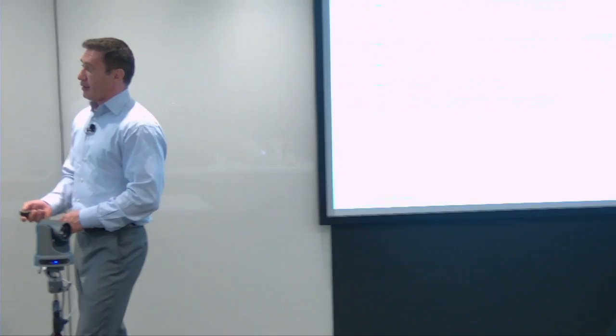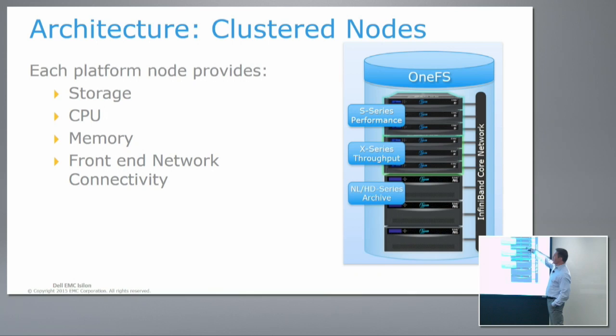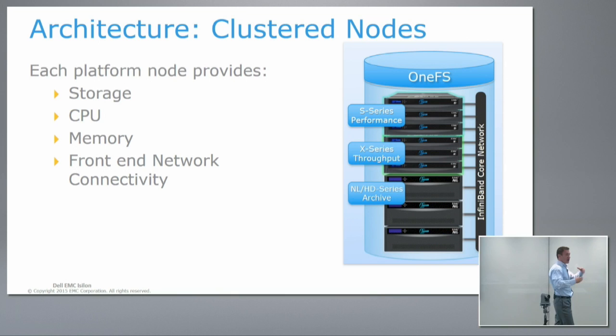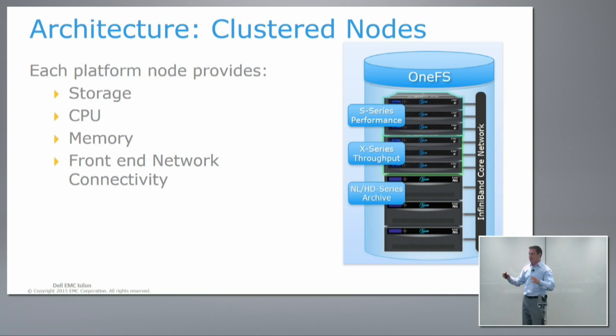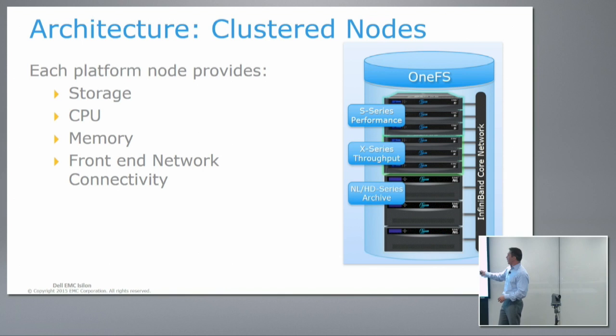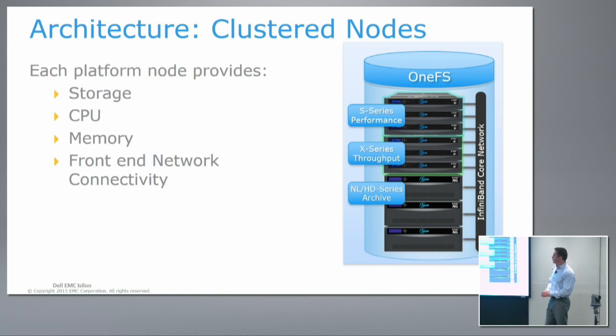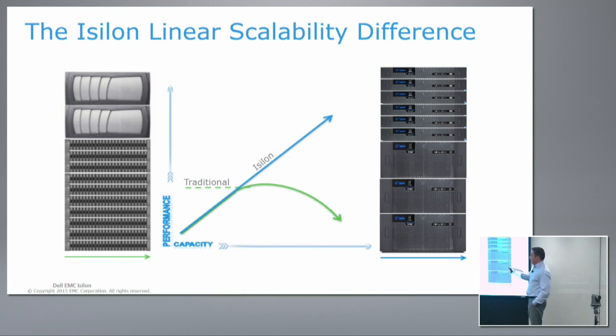In terms of the actual cluster nodes, you can put multiple node types together into a single namespace, so it looks like one large file system. It might consist of S series, X series, NL or HD series nodes. Policies move data up and down the tiers transparently. From the application's perspective, nothing moves — the application doesn't see data disappear from a directory. It's just being moved on the back end, though performance may vary depending on where a given file resides.